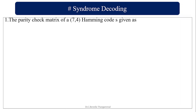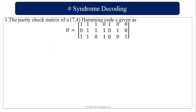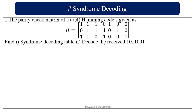And correct the error by X equals Y modulo-2 addition of E. Let's solve the problem. The parity check matrix of a (7,4) Hamming code is given by H. Find the syndrome decoding table and decode the received vector. This is the H matrix given.